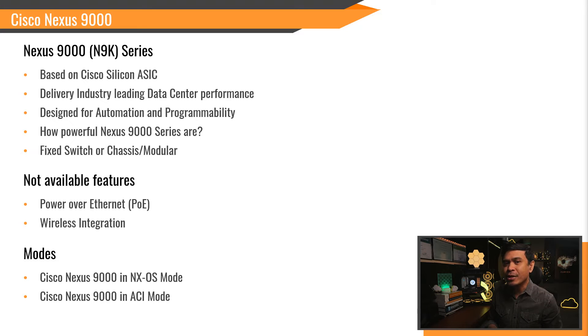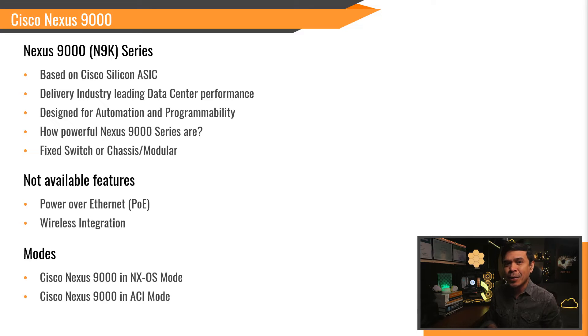The Nexus 9000 has two modes: Cisco Nexus 9000 in NXOS mode, and Cisco Nexus 9000 in ACI mode. So what is the difference?